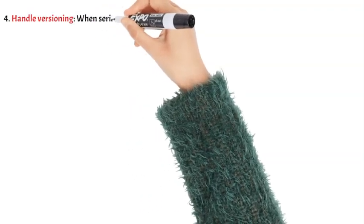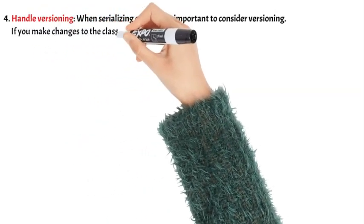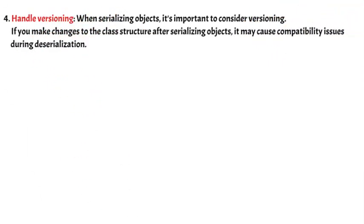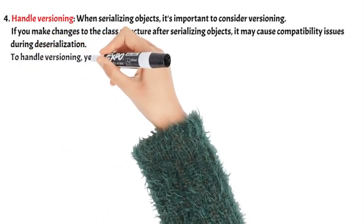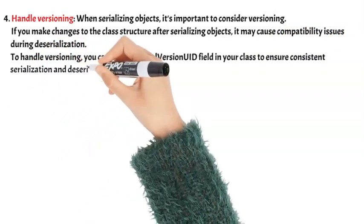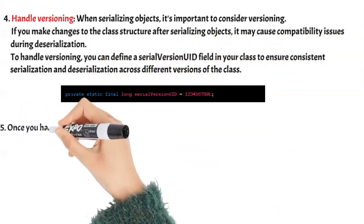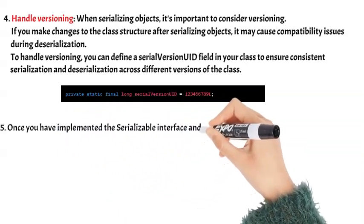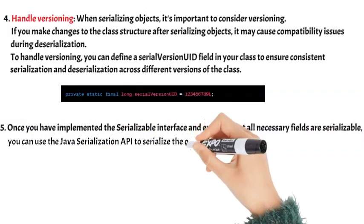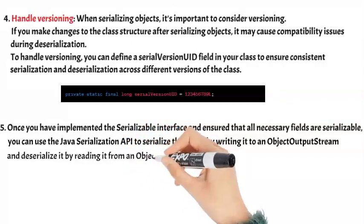Fourth, handle versioning: when serializing objects, it's important to consider versioning. If you make changes to the class structure after serializing objects, it may cause compatibility issues during deserialization. To handle versioning, you can define a serialVersionUID field in your class to ensure consistent serialization and deserialization across different versions of the class. Once you have implemented the Serializable interface and ensured that all necessary fields are serializable, you can use the Java serialization API to serialize the object by writing it to an ObjectOutputStream and deserialize it by reading it from an ObjectInputStream.